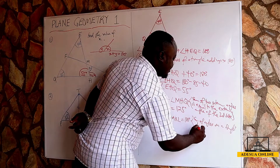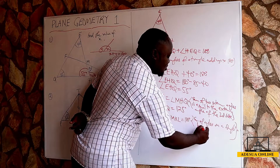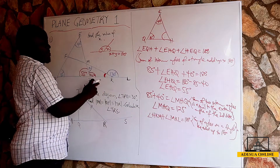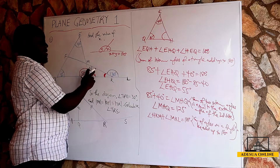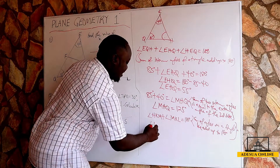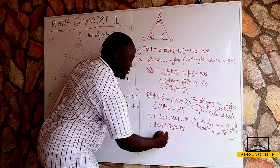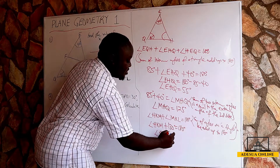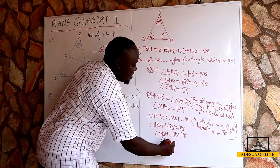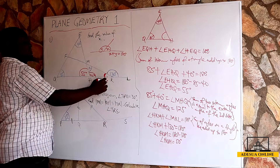The sum of angles on a straight line adds up to 180, so angle HKM plus MKL, which is 130 degrees, equals 180. Therefore angle HKM is equal to 180 minus 130, which gives us 50 degrees.